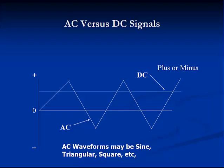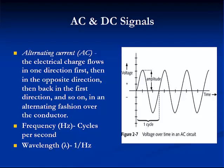AC current can follow a sine, triangle, square, or some other waveform. In alternating current, the electrical charge flows in one direction first, then in the opposite direction, then back in the first direction, and so on, in an alternating fashion over the conductor. The strength of the voltage is indicated by the wave's amplitude. The number of times each second the wave cycles from its starting point through a full oscillation back to its starting point is known as frequency. Frequency is measured in hertz, or cycles per second. Wavelength is the inverse of frequency.